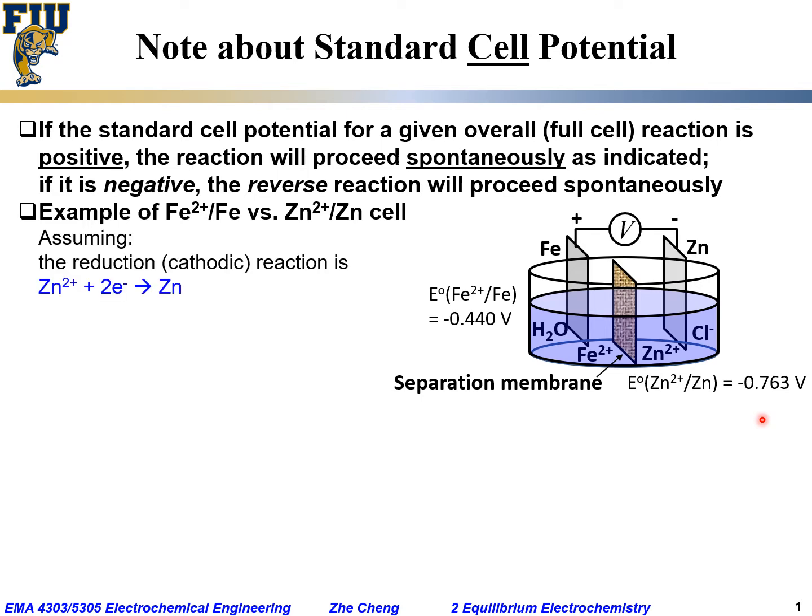Assume the reduction reaction, also called a cathodic reaction, is actually happening on the zinc electrode, which means Zn2+ combined with electrons to form zinc metal. If this is the reduction reaction.